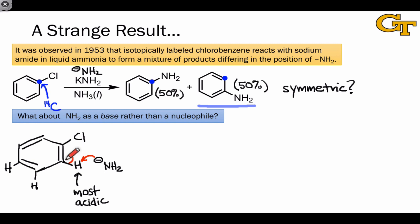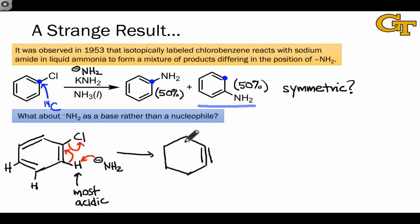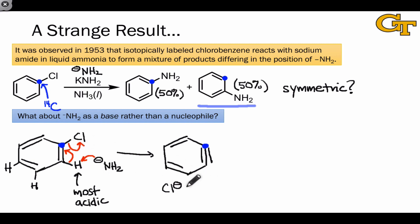That could lead to an aryl anion like this. But with a leaving group next door, we can also imagine E2 elimination. The compelling thing about the E2 step is that it generates exactly the symmetric intermediate that we would need to explain the result above. Notice that with the exception of the carbon-14 label, the two carbons that bond to NH2 in the observed products are now symmetric — they're homotopic. So, as unusual as this sounds, eliminating Cl- by deprotonating an ortho hydrogen in chlorobenzene does help explain both the product distribution and the structures of the observed products.